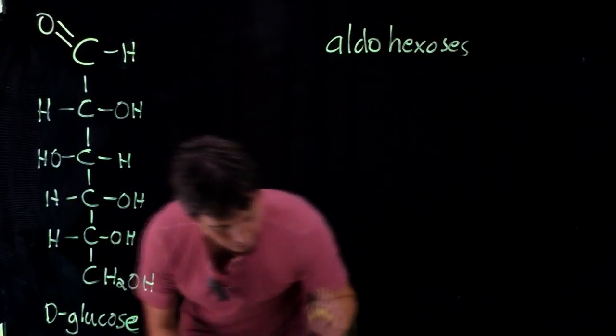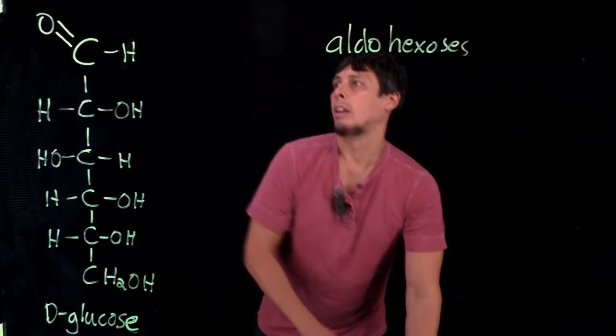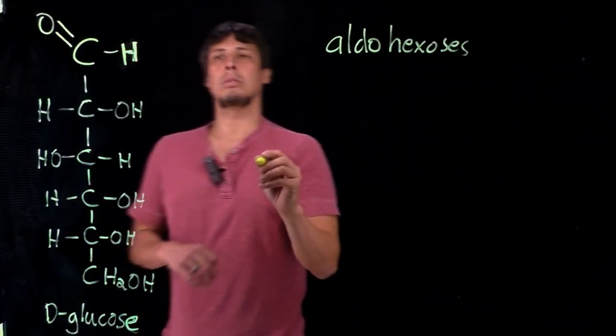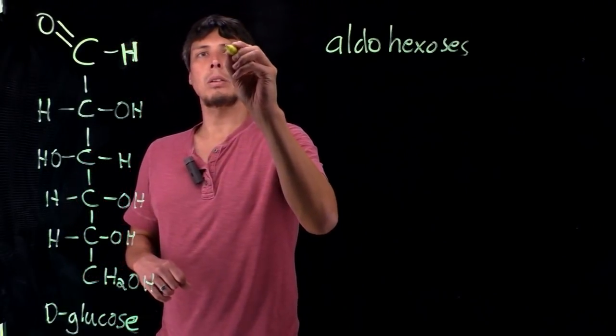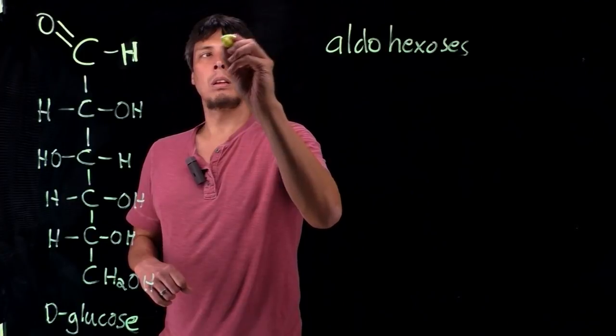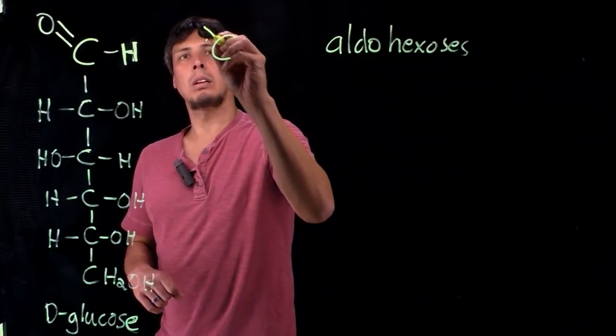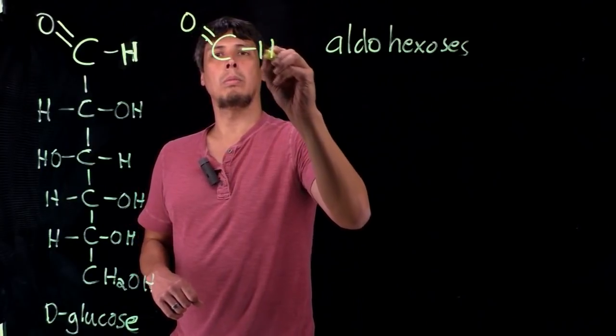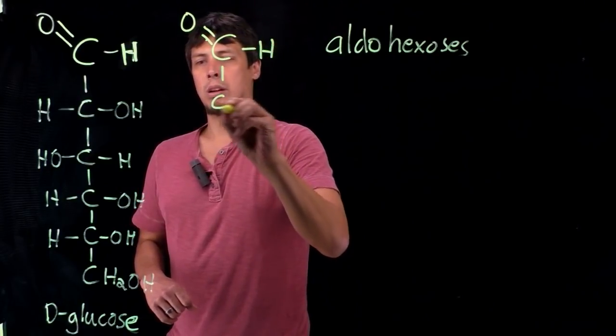All right, so right next to it we're going to draw the mannose. So again, it's also an aldohexose, so here's our aldehyde group, we'll draw our six carbons.